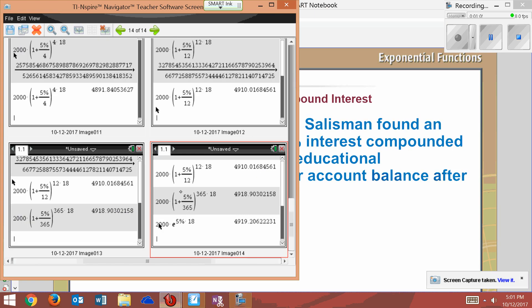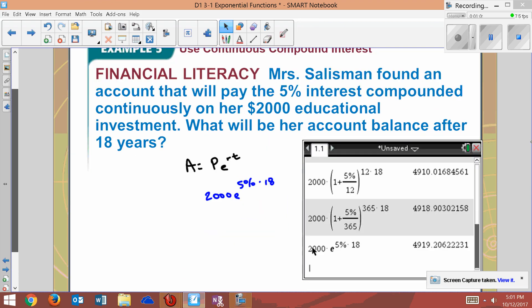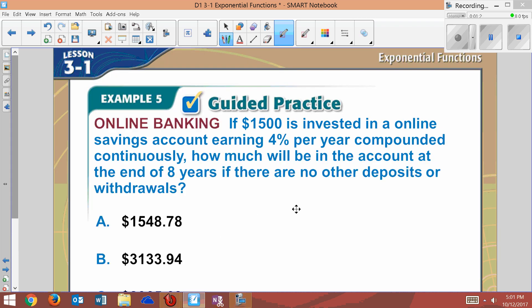Every time you increase the amount you compound, the value should grow. So our answer here is $4,919.21 once you round. Now you have one to try. See what you come up with.